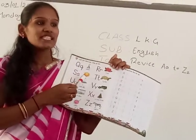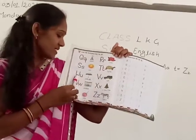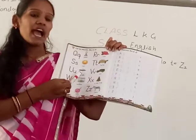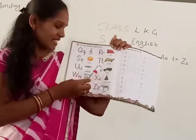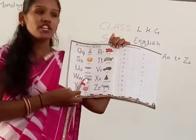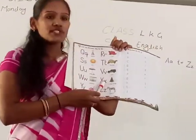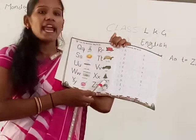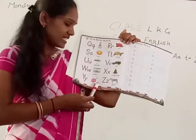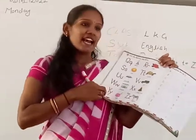S for Sun. T for? U for Umbrella. V for? W for Window. Where is the window? Show me. Here is the window in our classroom. That is the window. X for? Y for? Z for Z.